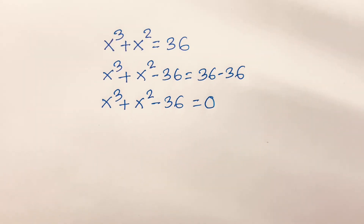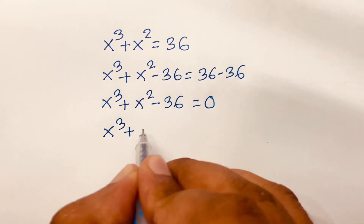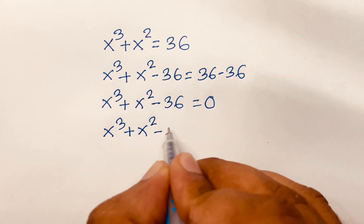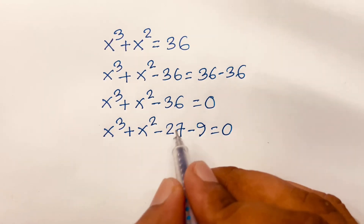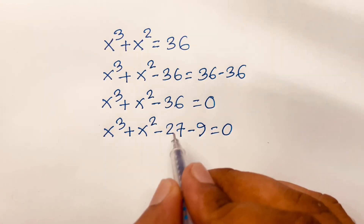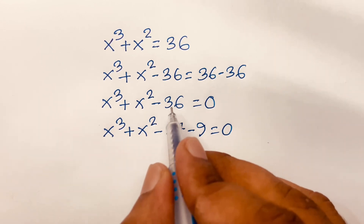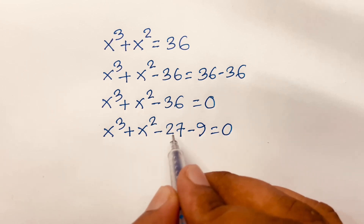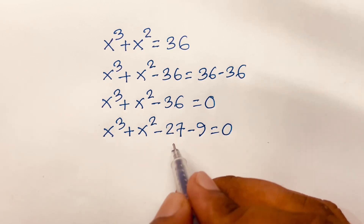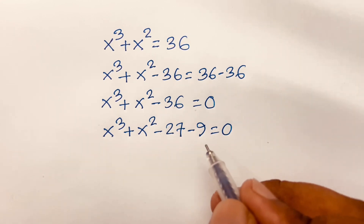This equation becomes x to the power 3 plus x squared minus 27 minus 9 is equal to 0. Why minus 27? Because we have x to the power 3, and we need to find minus 36. The nearest cubic number is minus 27, and minus 27 plus minus 9 equals minus 36.